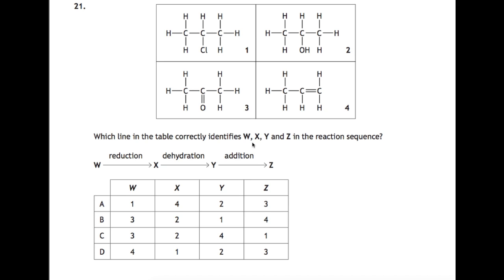So here we have question 21, and we have four molecules and we are to find the line in the table which shows the reaction sequence between the four molecules. So we have a reduction, a dehydration, and an addition. One of the clues I would look for is the addition here. That has to mean that Y is your molecule with the double bond if you're going to be adding something onto it. So this one here must be Y.